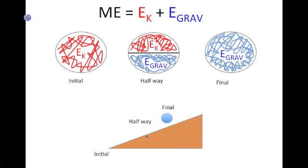When it's halfway up, it's moved up so there's an H value. It's got a height now, but it's slowed down. So it has less kinetic energy and more gravitational potential energy. And once it gets to its final position on the slope, it stops. So there's no kinetic energy, but it's achieved a relatively high position in the gravitational field. So E-grav is at its full amount.